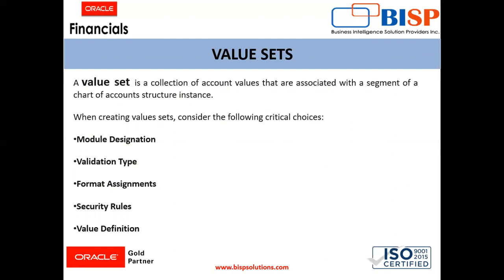Other validations provided by the system prevent us from using the full chart of account functionality, such as the data security, reporting, and accounting hierarchy integration. Then comes the format assignment. Value sets of the chart of account must use the value data type of character and the value subtype as text. These two settings support values that are both numbers and characters, which are typical in the natural account segment values.